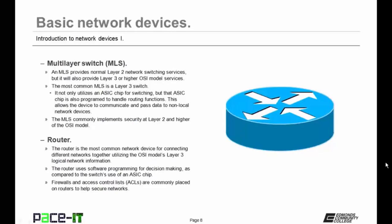Then we have the multi-layer switch, or the MLS. An MLS provides normal Layer 2 network switching services, but it will also provide Layer 3 or higher OSI model services. The most common MLS is called a Layer 3 switch. It not only utilizes an ASIC chip for switching, but that ASIC chip is also programmed to handle routing functions. This allows the device to communicate and pass data to non-local network devices. The MLS commonly implements security at Layer 2 and higher of the OSI model. MLSs are not very common in small networks due to their expense.